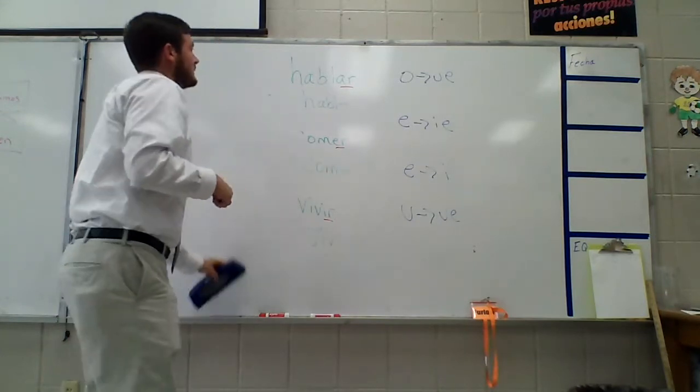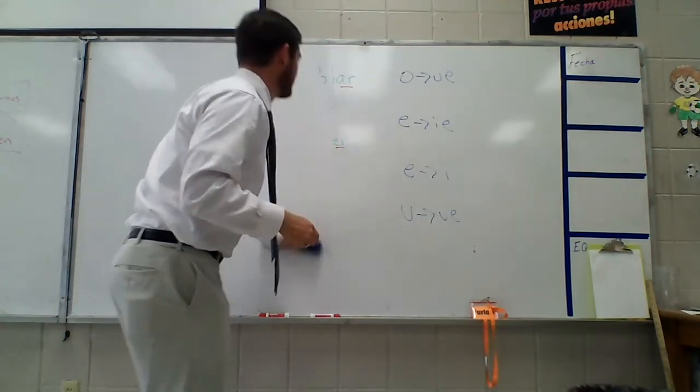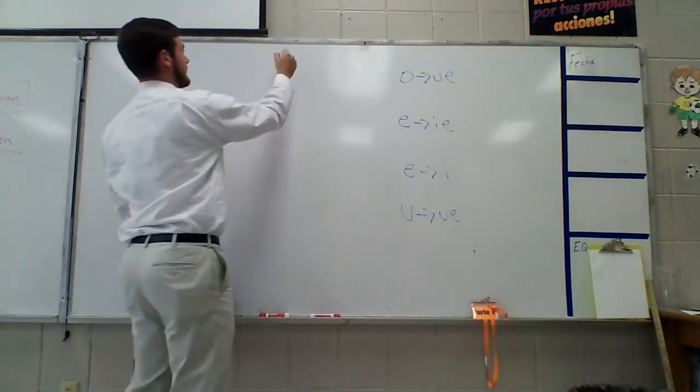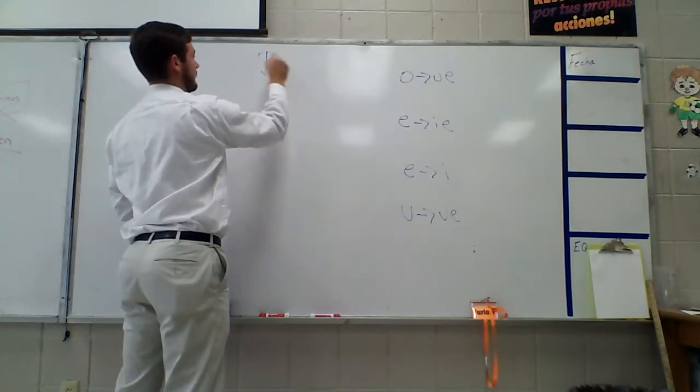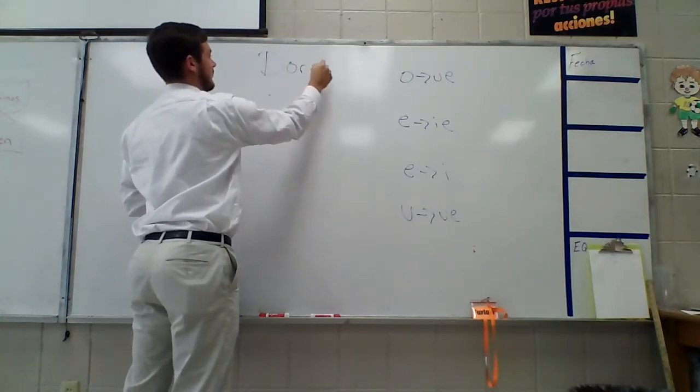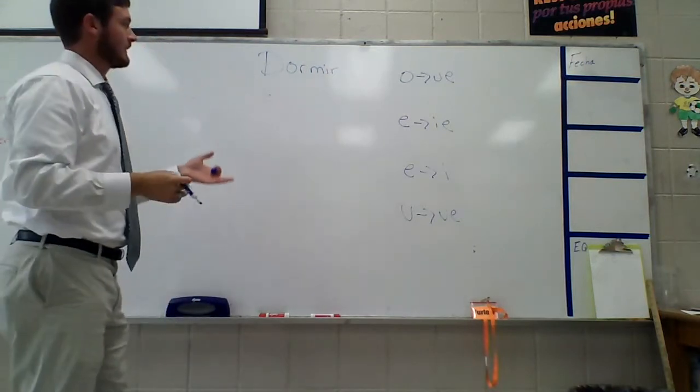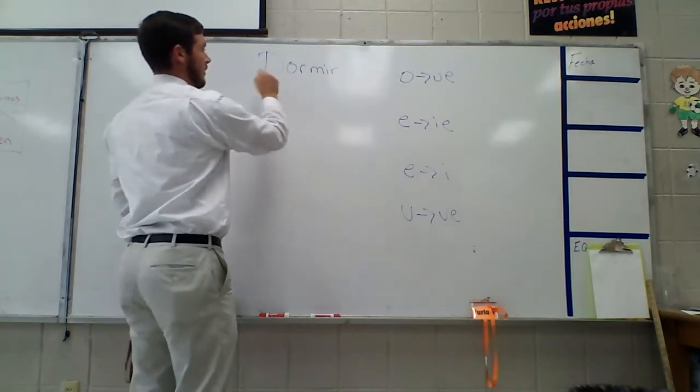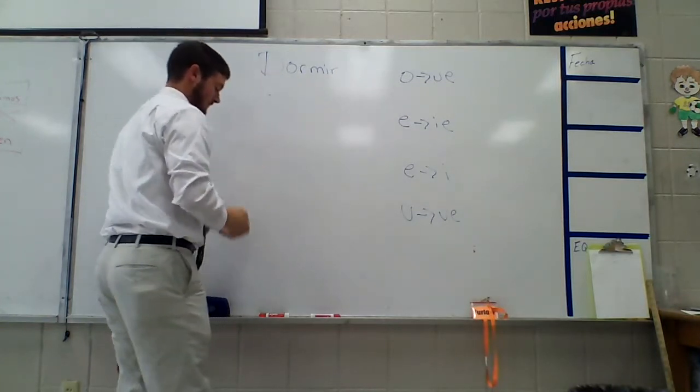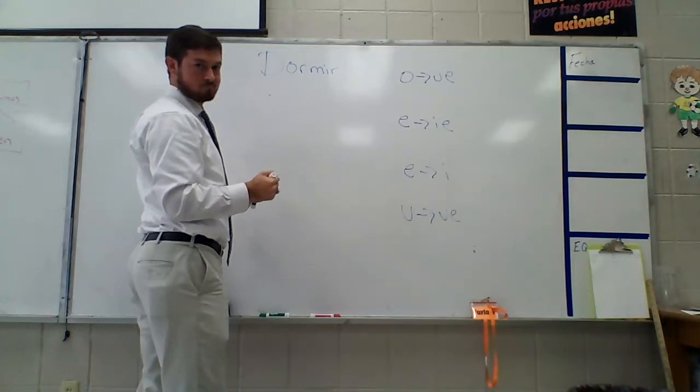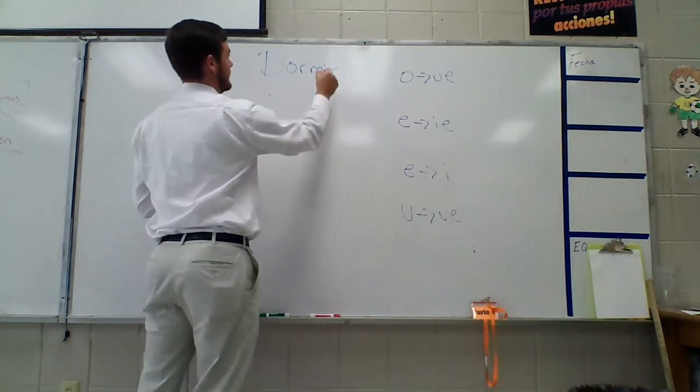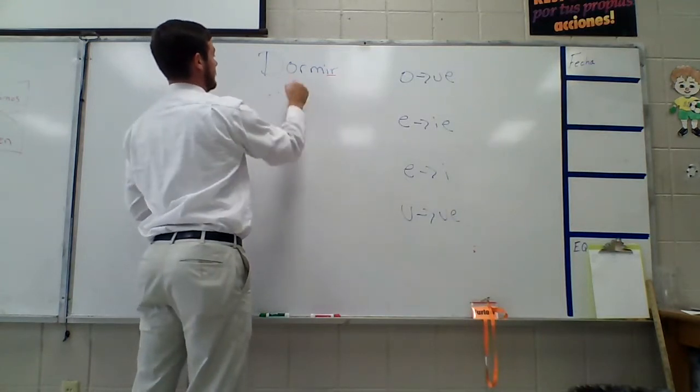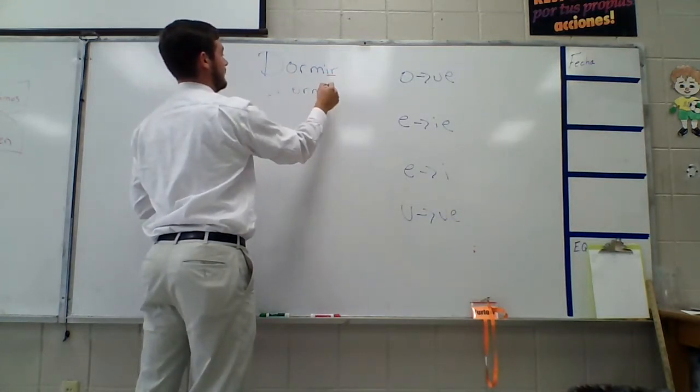So let me erase this and then we'll lay across the top and I'll give you some examples of each one. So for that O-T-U-E, let's say we have the verb dormir. Dormir means to sleep. And the stem is going to change from O-T-U-E. So our stem, let's just start off by finding our stem. Our stem is what? You got it? D-O-R-M. Because we take off the IR, the last two, and we're left with D-O-R-M.